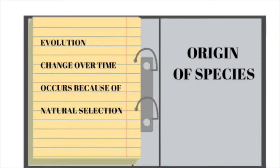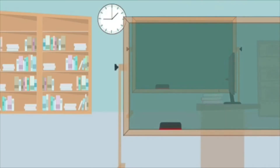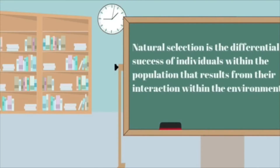In his Origin of Species, Darwin talked about evolution and natural selection. Evolution, or change over time, occurs because of natural selection. Natural selection is the differential success of individuals within the population that results from their interaction with the environment.